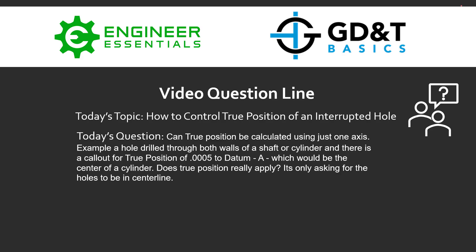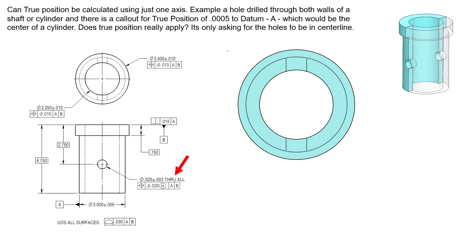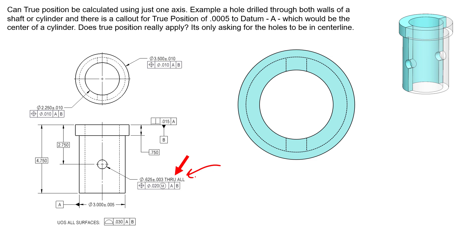Let's take a look at a couple of examples to see what we can do with this interrupted hole situation. I've drawn an example here — the values differ from the question but the situation is the same. We have the two walls of a cylinder and a hole going all the way through. We can call this hole out in a couple of different ways. First, we show 0.625 as the diameter of the hole with a size tolerance, and we're specifying that the hole goes through all — both walls of the cylinder.